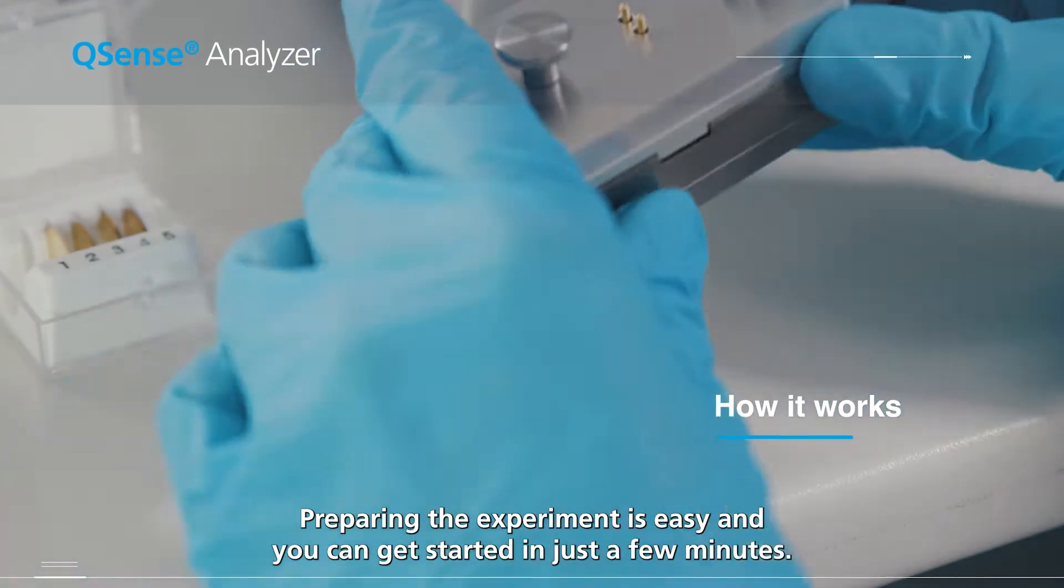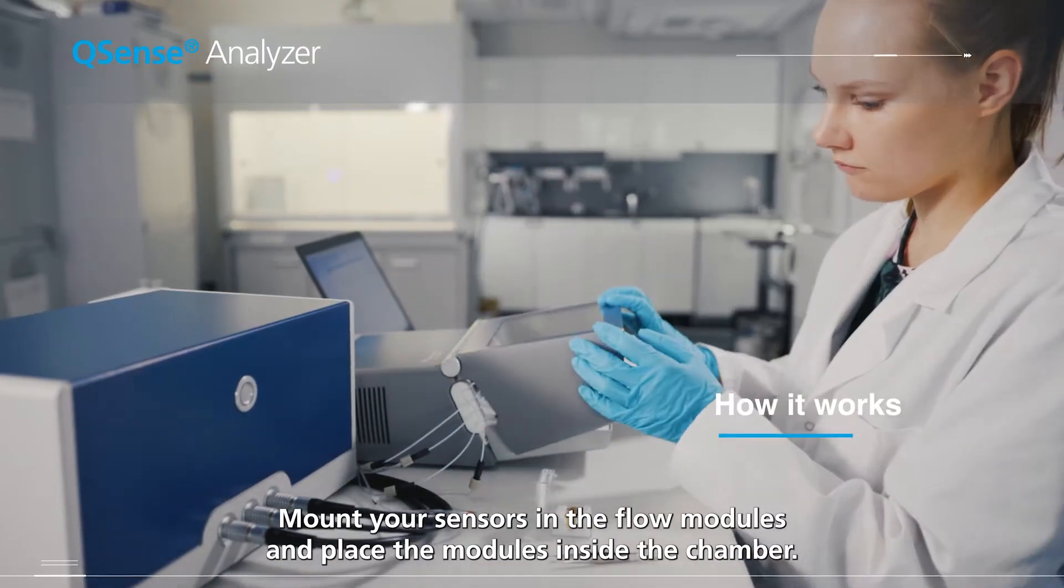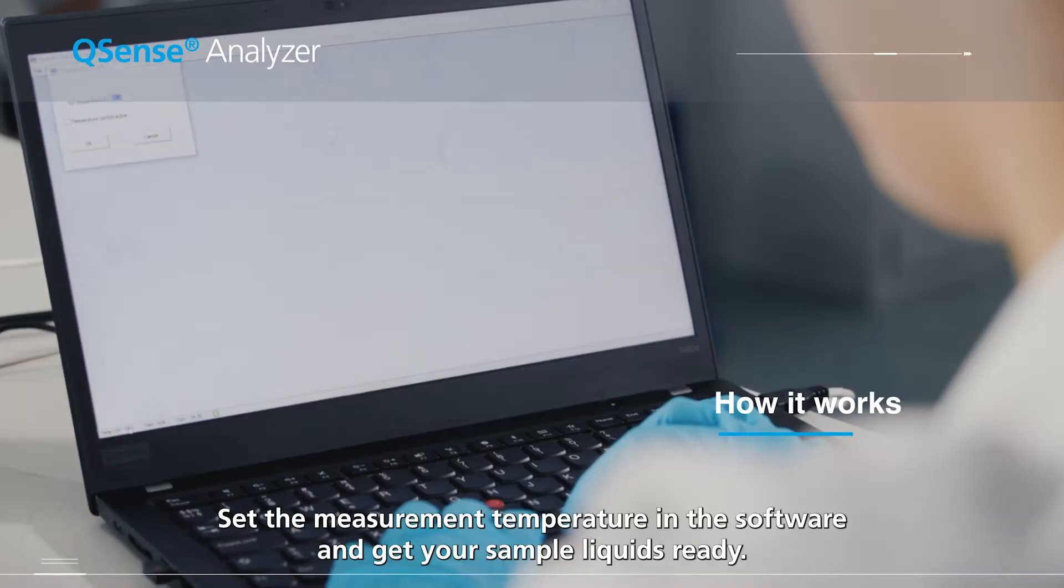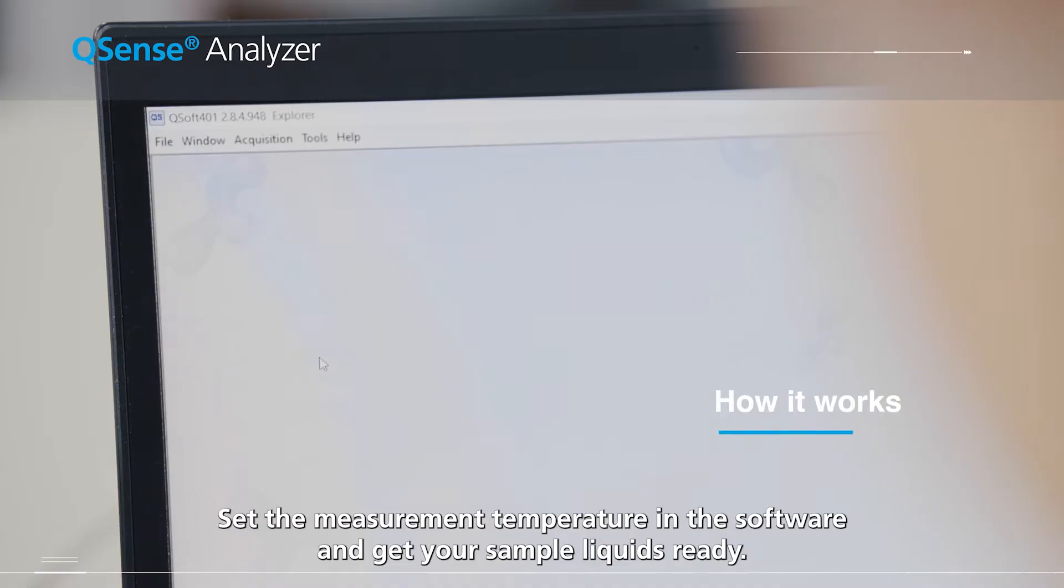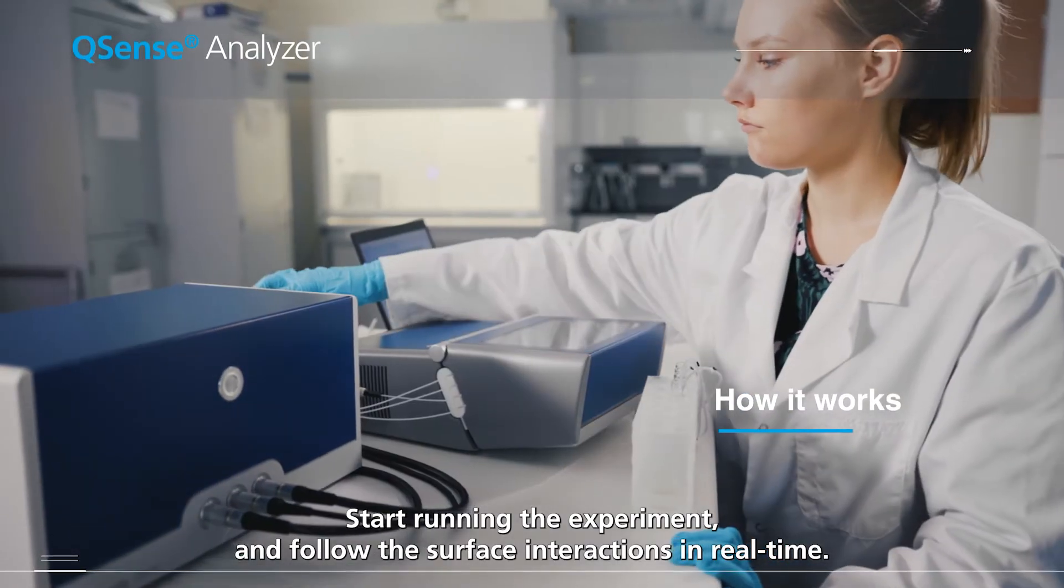Preparing the experiment is easy and you can get started in just a few minutes. Mount your sensors in the flow module and place the modules inside the chamber. Set the measurement temperature in the software and get your sample liquids ready. Start running the experiment and follow the surface interactions in real time.